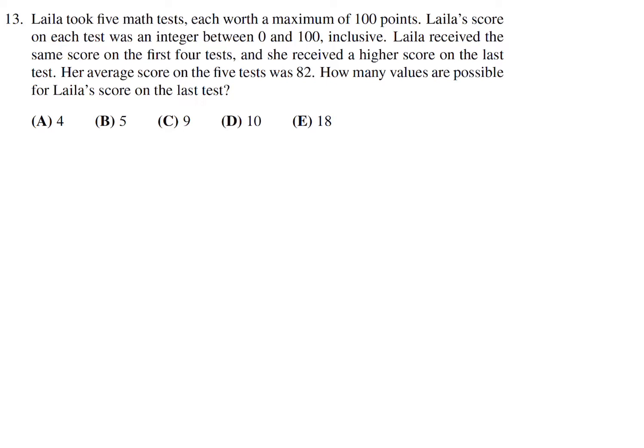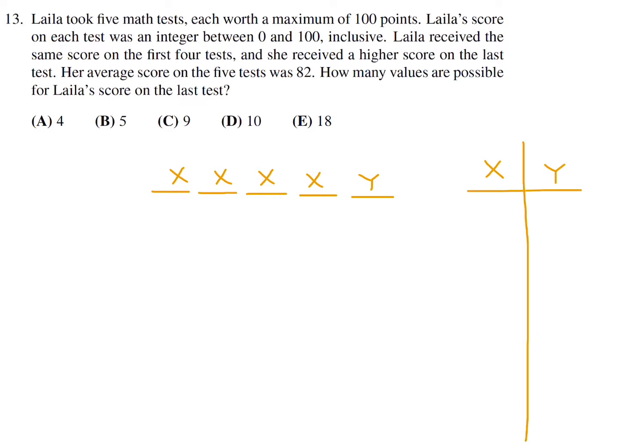Layla took 5 math tests, each worth a maximum of 100 points, with integer scores between 0 and 100 inclusive. She received the same score on the first 4 tests and a higher score on the last test. Her average score was 82. How many values are possible for Layla's score on the last test? We set up: 4X + Y divided by 5 equals 82, so 4X + Y = 410.